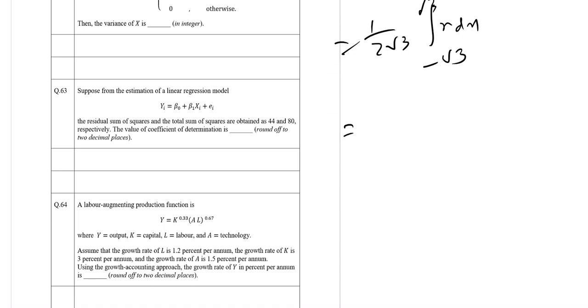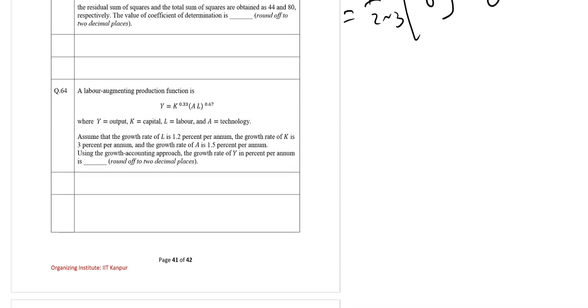So expectation of X, we can just solve it. 1 by 2 root 3, and here we get 0. So this is 0. So the mean is 0.